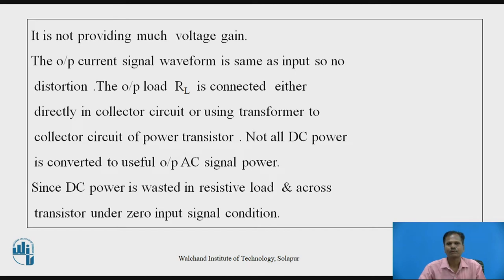The output load resistance RL is connected either directly in the collector circuit or using a transformer to the collector circuit of the power transistor. Not all DC power provided in the collector circuit of the transistor is converted to output useful AC signal power, since DC power dissipated in the collector circuit is wasted in resistive load and across the transistor under zero input signal condition or in the presence of an input signal condition.